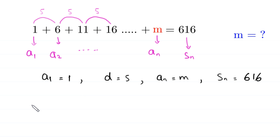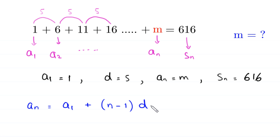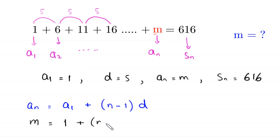The first formula is: the last term A sub n equals A sub 1 plus n minus 1 times D, the common difference. Substituting our values, m equals 1 plus n minus 1 times 5.